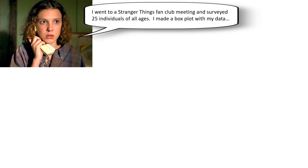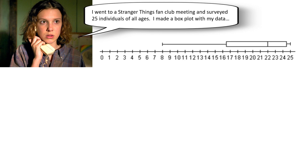Eleven called and said she went to a Stranger Things fan club meeting and surveyed twenty-five individuals of all different ages. She thinks this is good data because the people she surveyed were not all in the same grade level like Mike, Dustin, and Lucas found. Here's her data on a box plot. I can't tell how many people she surveyed just from the box plot, but she told me twenty-five individuals — already more data than the others collected.